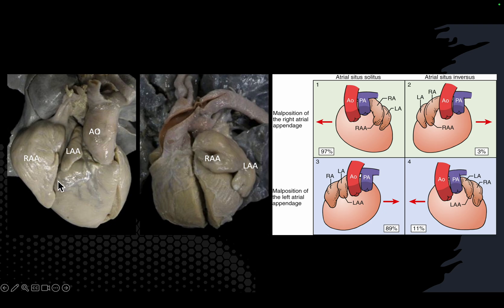This is a pathological specimen showing the right atrial appendage and the left atrial appendage on the right side. This is a diagrammatic representation showing that both atrial appendages are on one side of the arteries — either the right side or the left side. These are called juxtaposed atrial appendages.